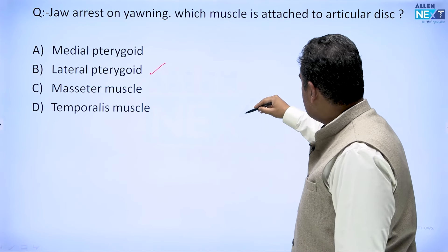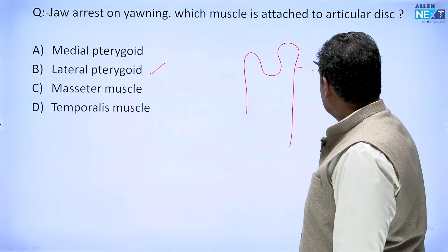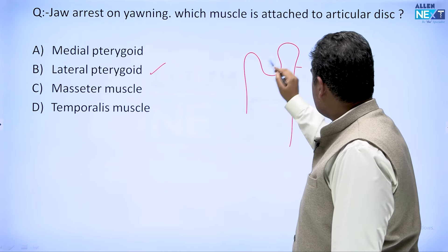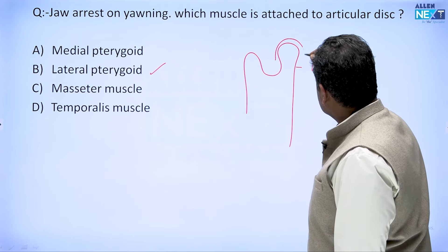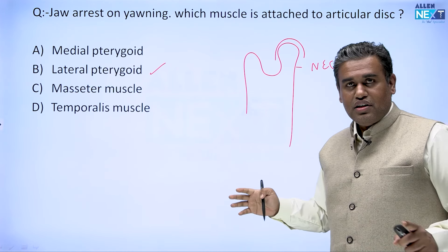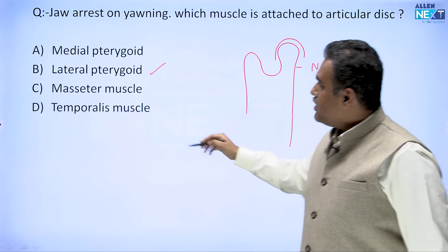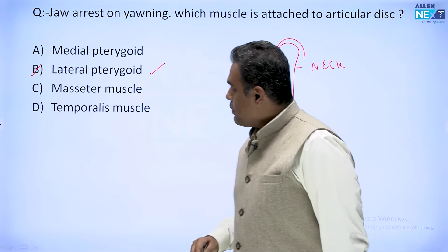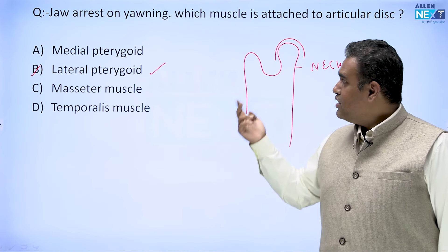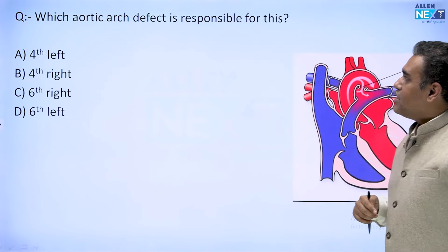Imagine the coronoid process and condyloid process — the neck of the mandible is where the lateral pterygoid muscle attaches, and this is where the articular disc is. It is a complete disc separating the TMJ into two cavities. This is quite a famous question: the articular disc and the lateral pterygoid muscle, one of the masticatory muscles supplied by the mandibular nerve, helps in opening of the mouth.